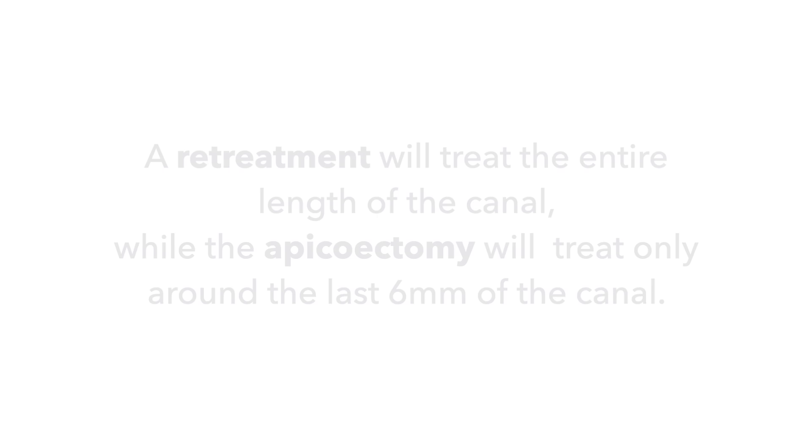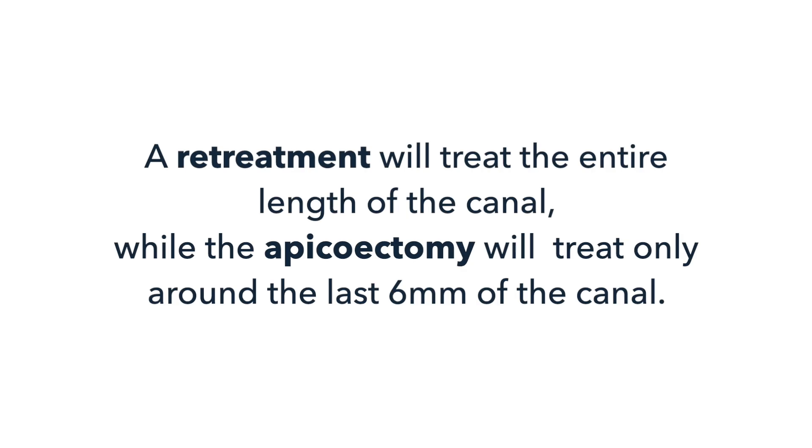Let's talk about the key differences between an orthograde retreatment and an apicoectomy. A retreatment will treat the entire length of the canal, while the apicoectomy will treat only around the last six millimeters of the canal. So if you suspect that the entire root is contaminated, then a retreatment should be your first choice. And if you suspect a missed canal, then retreatment should definitely be your first choice.